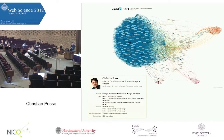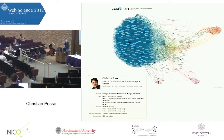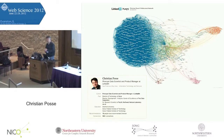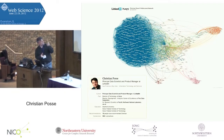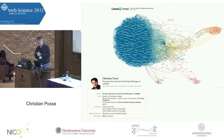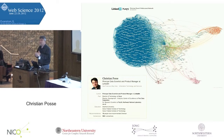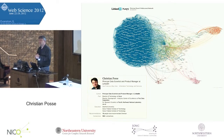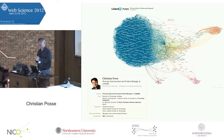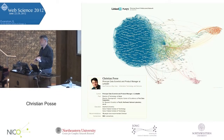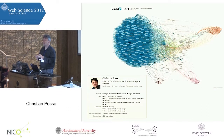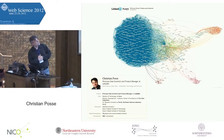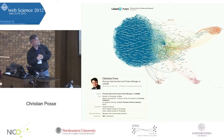The InMap is essentially what you're seeing in the back — a visual representation of someone's professional network. This is mine; I generated it just yesterday. So this is my current professional network, and every dot on that graph is somebody that I know, somebody that I have a professional relationship with, somebody which is part of my professional sphere.